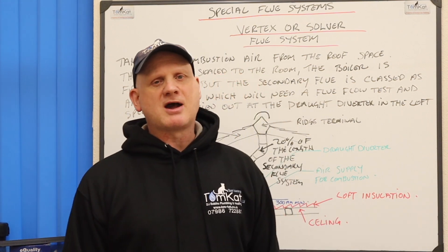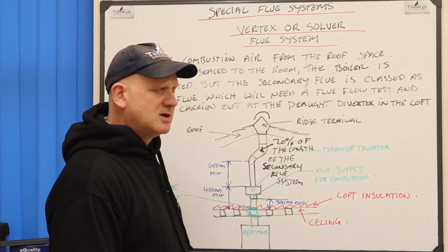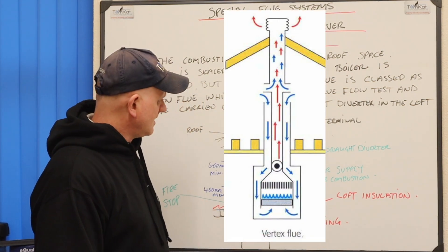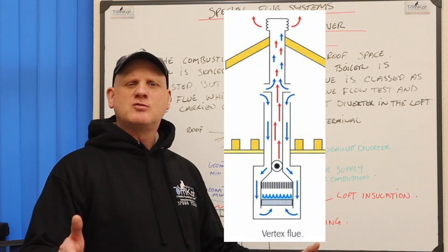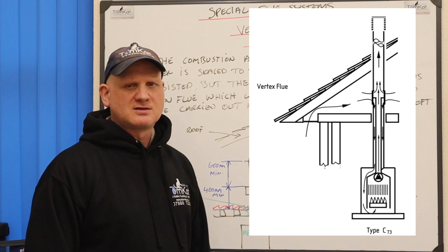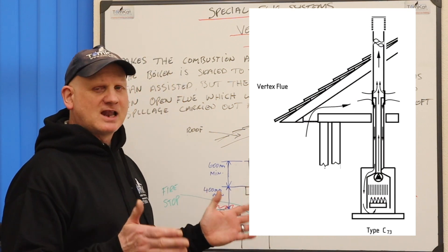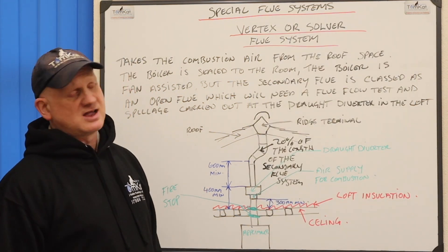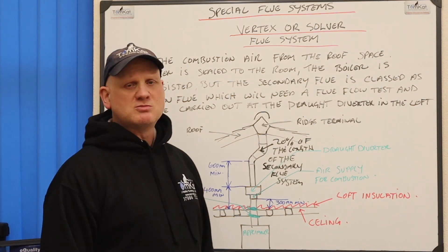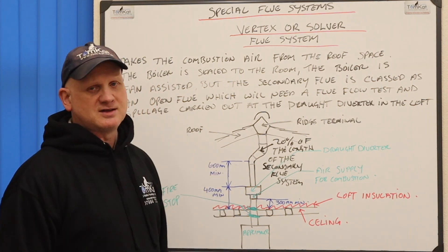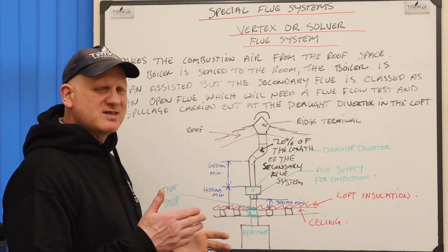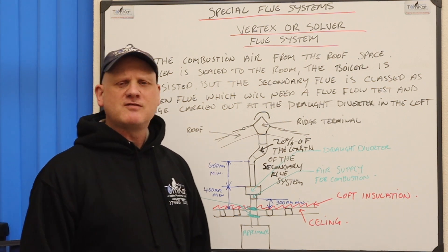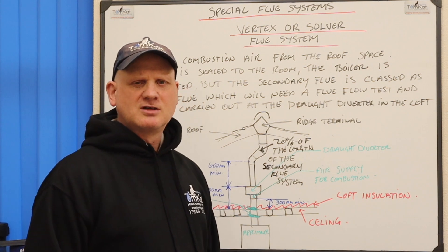Now then, what's special about this vertex or silver flue system? Well, basically it is a room sealed appliance, fan assisted, that takes its combustion air from within the loft space or the roof space. So the roof space has to be ventilated to allow for this combustion air. The boiler is sealed to the room and fan assisted, but the secondary flue is classed basically like an open flue appliance.